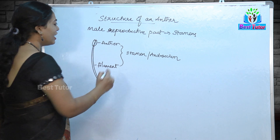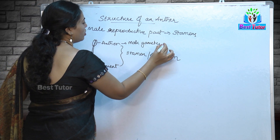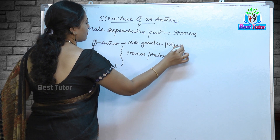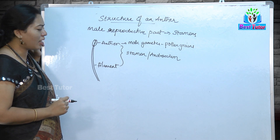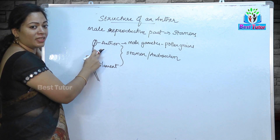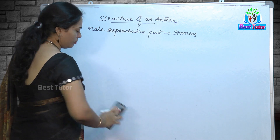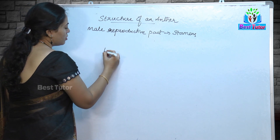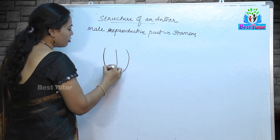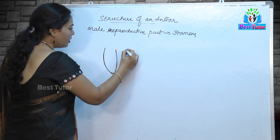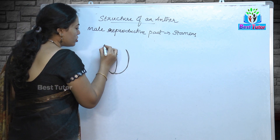The major function of this male reproductive part — the stamen — is that the anther contains the male gametes known as pollen grains. The male gametes essential for the reproduction part in a flower are located in the anther. Since we say it is a bilobed structure, the anther is divided into two lobes.